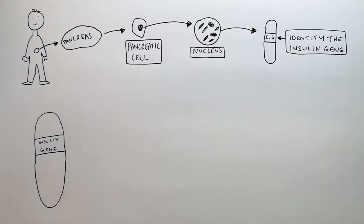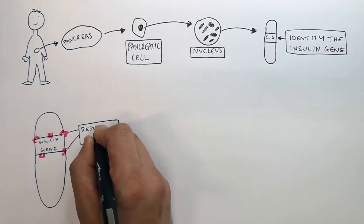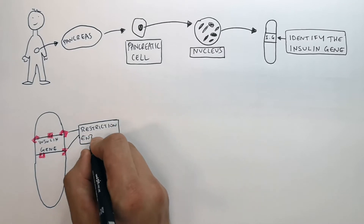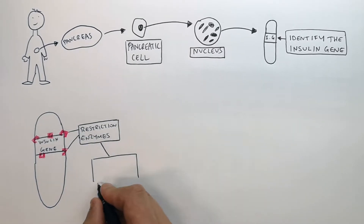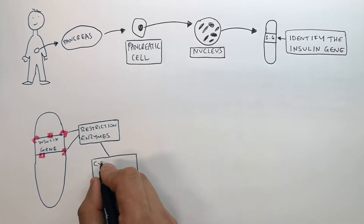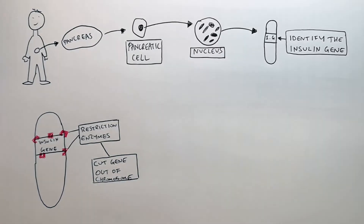We now use restriction enzymes to cut the DNA out. Restriction enzymes cut the insulin gene out of the chromosome.